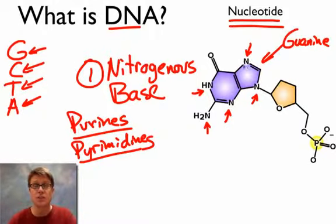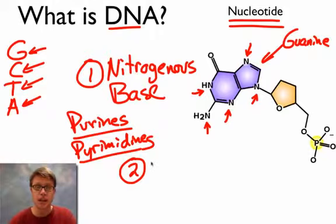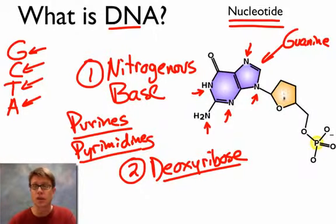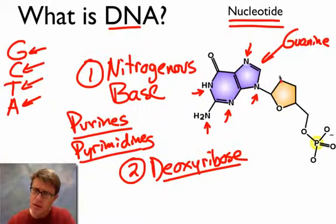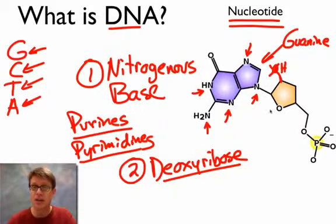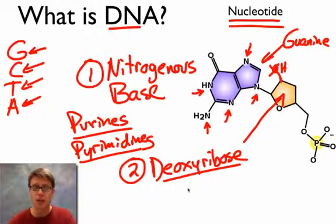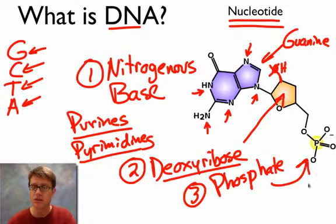The first part of a nucleotide is the nitrogenous base. The second part is this sugar, which in DNA is called deoxyribose sugar. In RNA it's a ribose sugar, but in DNA it's deoxyribose — because in a ribose sugar found in RNA there would be a hydroxyl group, but in DNA you're missing that oxygen, so we call it deoxyribose. The third part is a phosphate group, which we're familiar with from ATP.